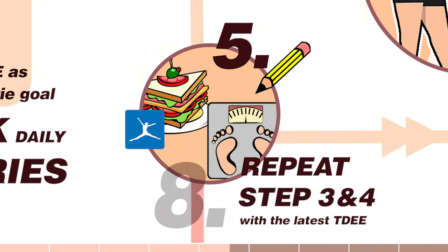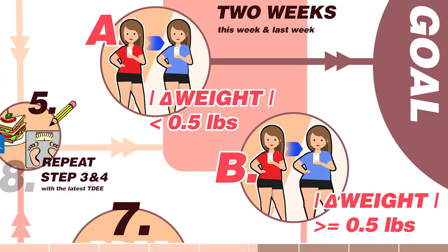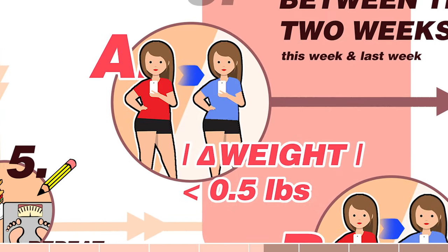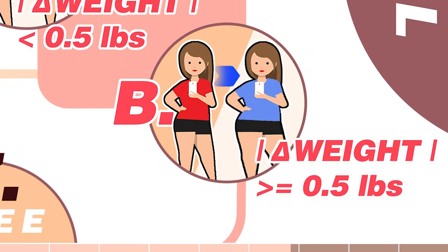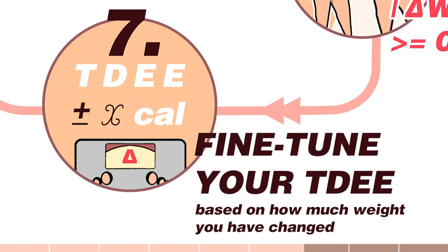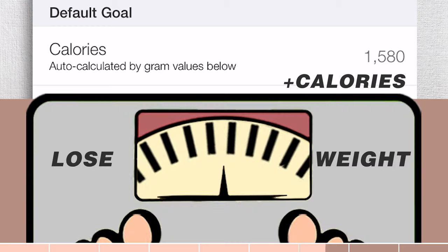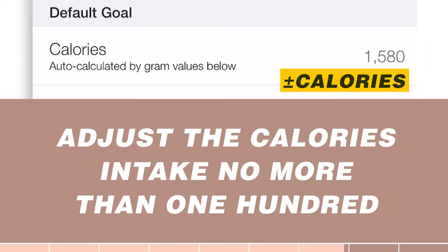Step 5: do Steps 3 and 4 all over again. Step 6: compare your average weight between this week and the previous week. Now you have two scenarios. Scenario A — if the weight difference is within half a pound, then you have probably found your TDEE. To be safe, keep monitoring your calorie intake and weight for another week to confirm. Scenario B — if the weight difference is more than half a pound, go to the next step. Step 7: fine-tune your predictive TDEE. Based on how much weight you have changed, add calories to your previous TDEE if you lost weight, or subtract calories if you gained weight. I suggest adjusting your calorie intake by no more than 100 calories.